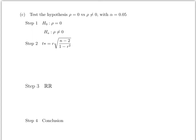Once you know the correlation, the next step is to check if it is statistically significant using hypothesis testing, just like in chapter 8. The claim is always H₀: ρ = 0 (no correlation). No correlation automatically means x doesn't cause y. If there is a correlation, it still doesn't necessarily mean x causes y.